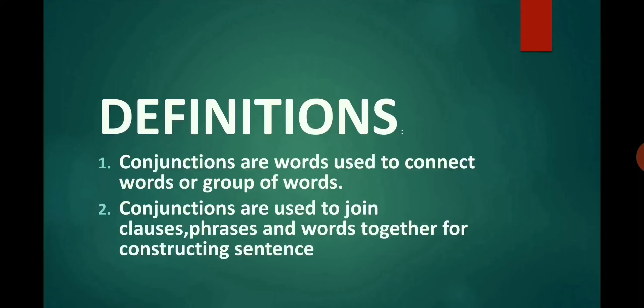What are conjunctions? Conjunctions are part of speech. They are words used to connect words or group of words. Conjunctions are used to join clauses, phrases and words together for constructing a sentence. A conjunction is a word used to join words or sentences, meaning to connect two or more words or two or more sentences.